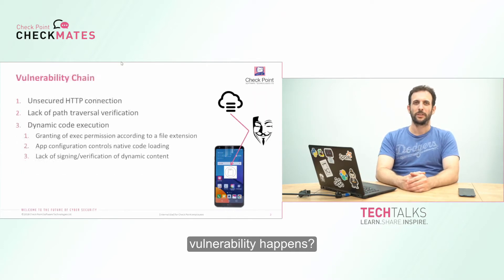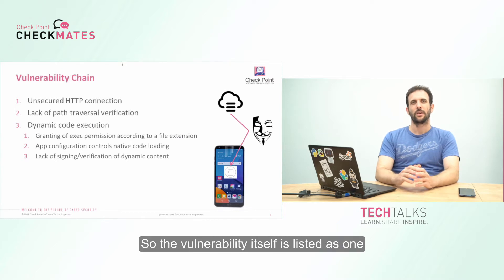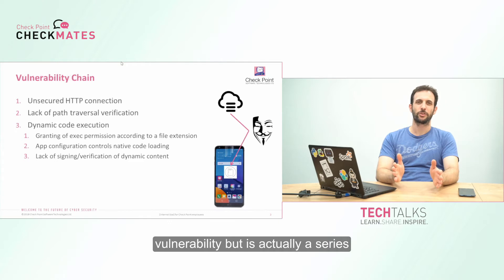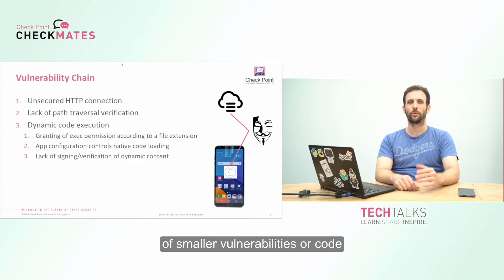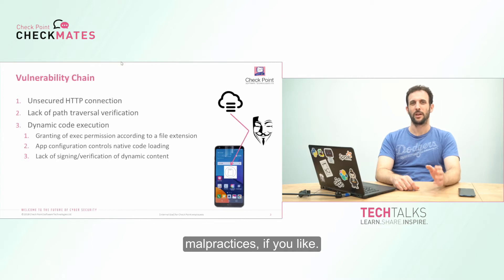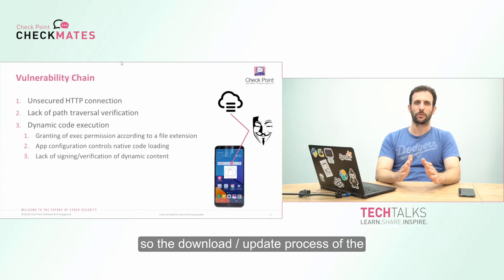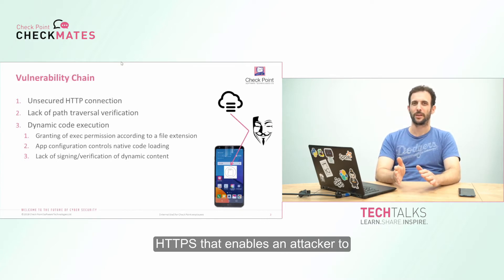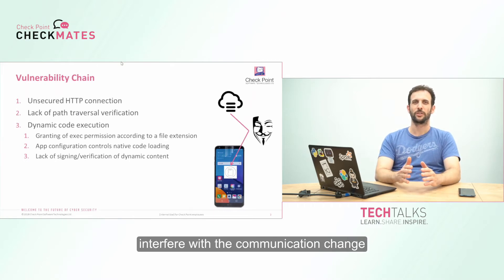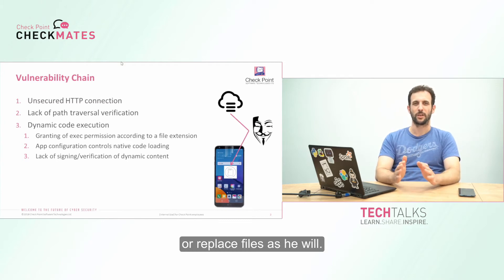How does the vulnerability happen? The vulnerability itself is listed as one vulnerability but is actually a series of smaller vulnerabilities or code malpractices. The first is insecure communication: the download and update process of the keyboard happens over HTTP instead of HTTPS, which enables an attacker to interfere with the communication and change or replace files.